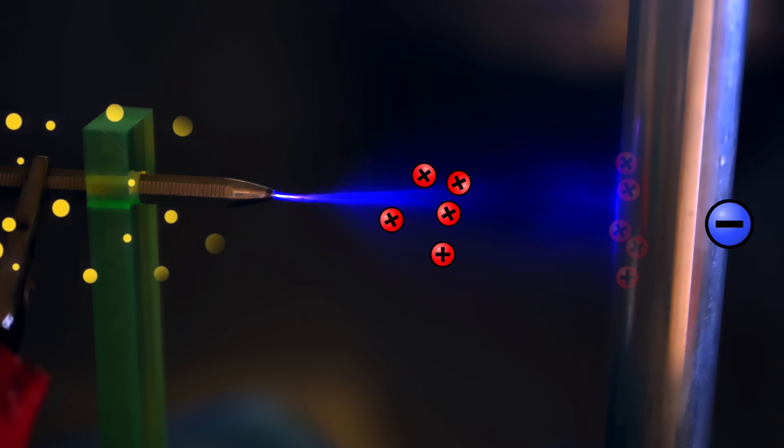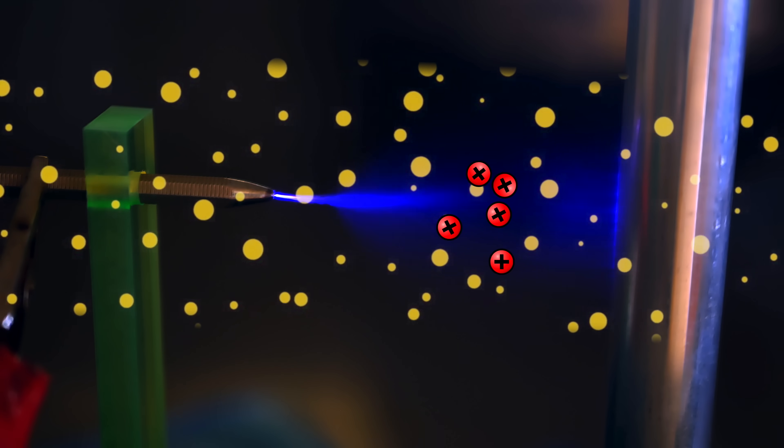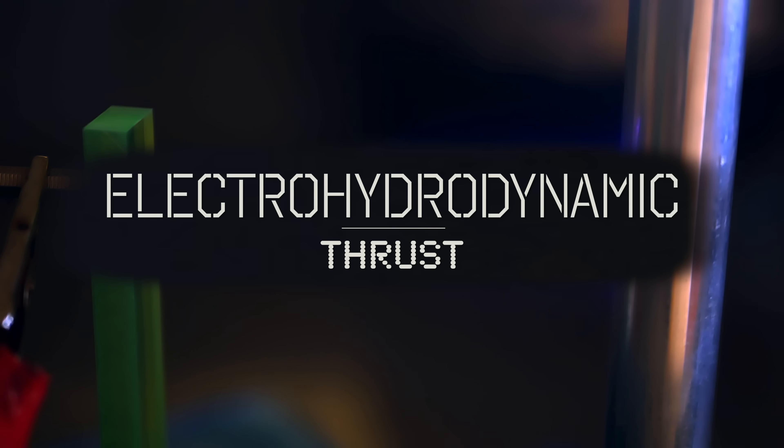In the process, they bump into other neutral air molecules and end up creating a flow of wind in that dedicated direction called electrohydrodynamic thrust. Or if you're not a schmuck, you just call it ionic wind.